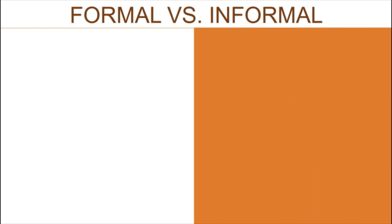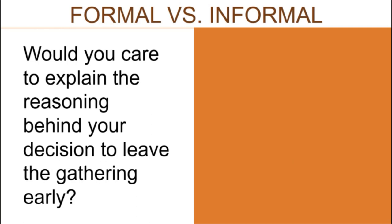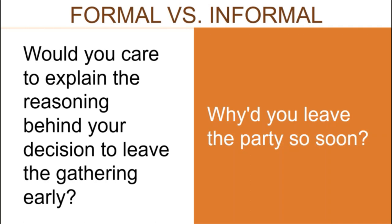Another example: imagine you were invited to a gathering by your boss, but you decided to leave early. Your boss may say, 'Would you care to explain the reason behind your decision to leave the gathering early?' There is a sense of authority and formality in the question. And of course, you have to respond formally: 'I'm sorry ma'am/sir. There was an unexpected family emergency and I was needed at home. I had to rush and was not able to ask for your permission. Please forgive me. It will not happen again.' But if it's just your friend who asked, they may say, 'Why'd you leave the party so soon?' And you may answer, 'Sorry, there was a problem at home and I had to leave.' Notice the difference?